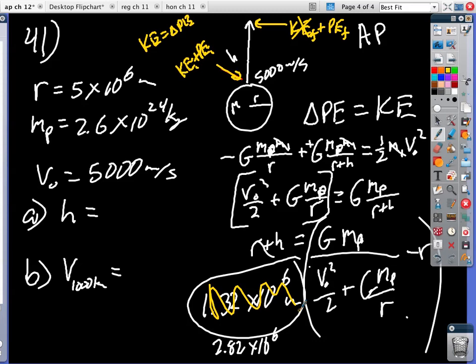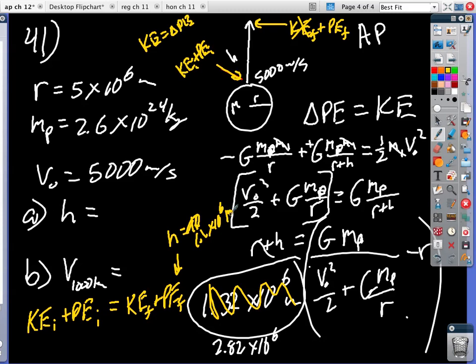For part B, it's the same thing, right? It's the same thing. It's just now you know H. And what I would do is, you know, you can just go ahead. Let's just go ahead and use their technique. I'm just going to say KE initial plus PE initial is going to equal KE final plus PE final. And now, in this, we know that H is 1 times 10 to the 5th meters. Does that make sense?